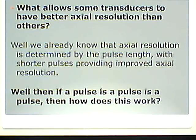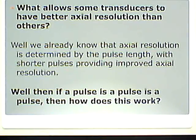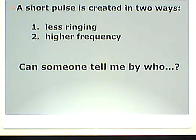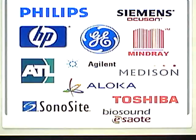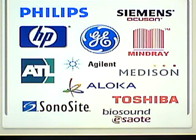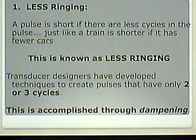What allows some transducers to have better axial resolution than others? Axial resolution is determined by pulse length, with shorter pulses providing improved axial resolution. A short pulse is created two ways: less ringing and higher frequency. Can we change that? No — we already learned it's not adjustable. Who does? Manufacturers — Philips, GE, Siemens, ATL, Toshiba — they do that as part of the process of building a probe.